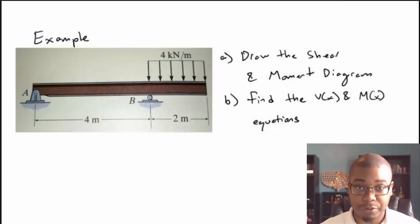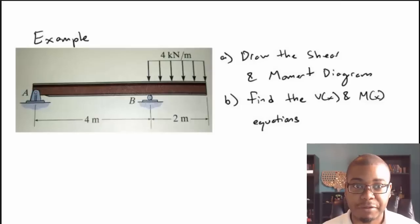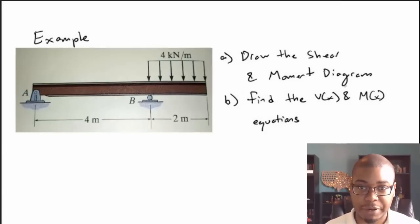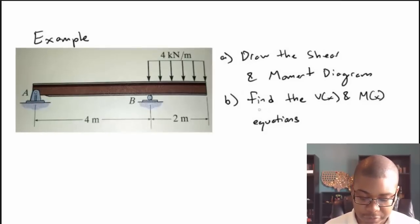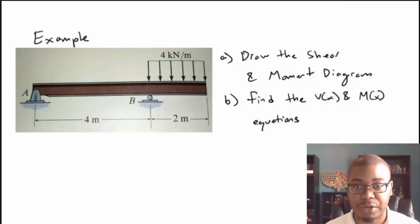The first thing we do whenever we solve a problem is we read the problem statement and look at the diagram we're given and try to understand it. Our problem statement says we need to draw the shear and moment diagram on part A, and part B says find the shear and moment equations — we need to take the lines from our shear and moment diagram and describe those as equations.